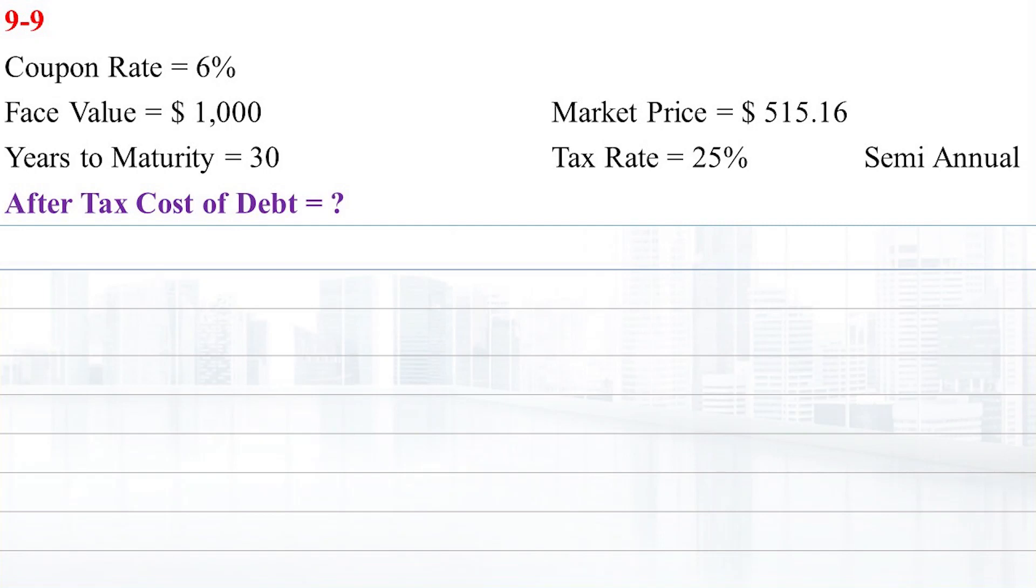A company's 6% coupon rate, semi-annual payments, $1,000 par value bond that matures in 30 years sells at a price of $515.16.